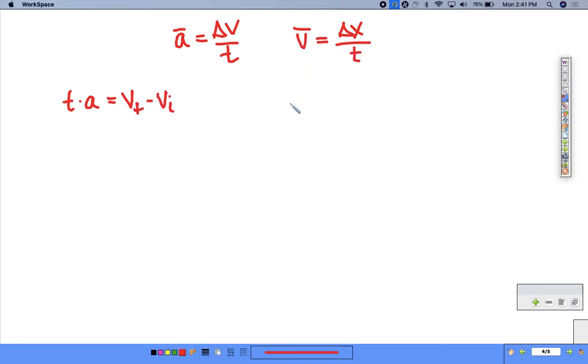On this side, average velocity, we take the final and the initial added together and divide by two.